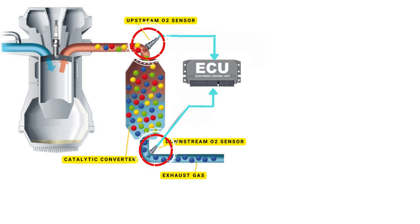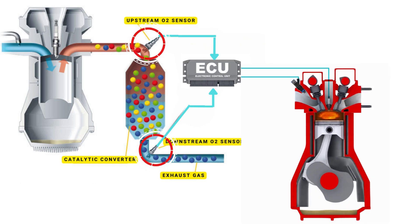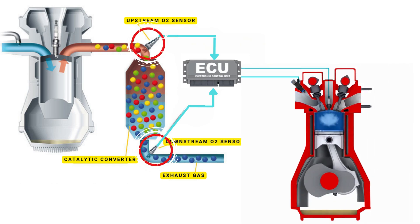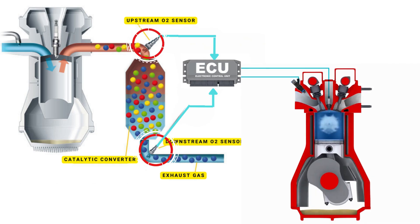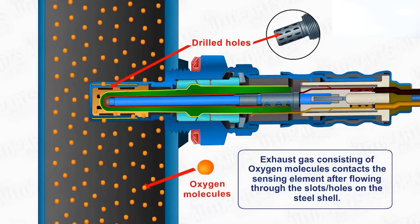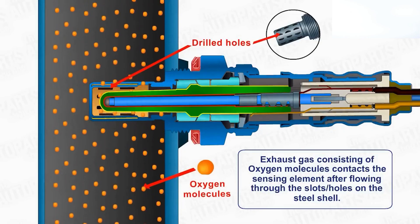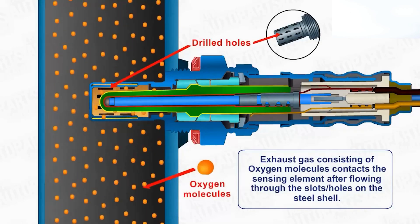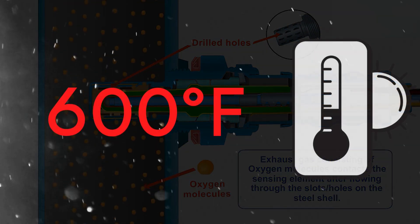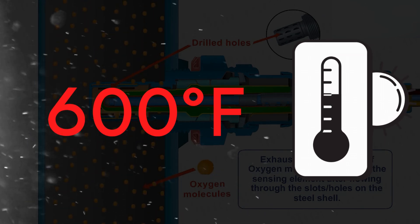The ECU controls the air-fuel ratio by adjusting the timing of the engine's valves, allowing just the right amount of air and fuel to enter the combustion chamber. However, an oxygen sensor won't function correctly until it's heated to a certain temperature — around 600 degrees Fahrenheit for conventional sensors.